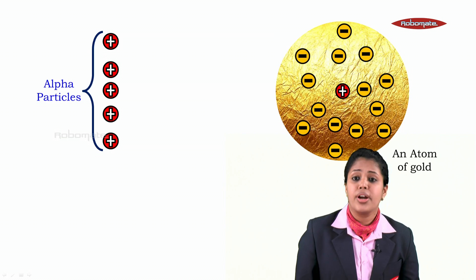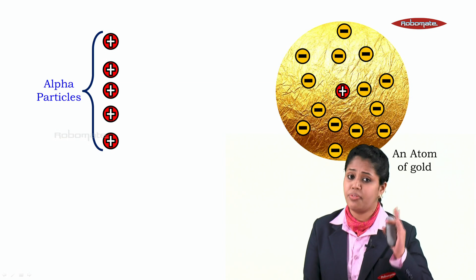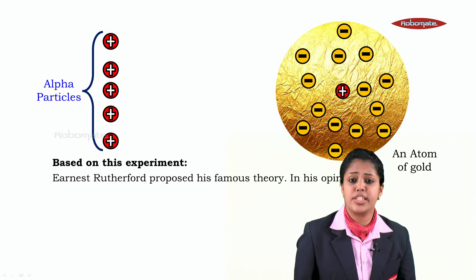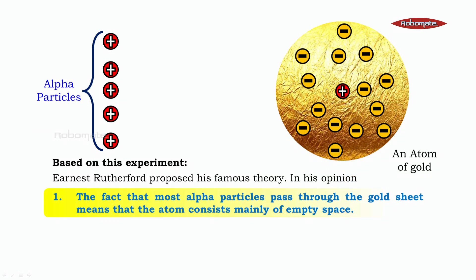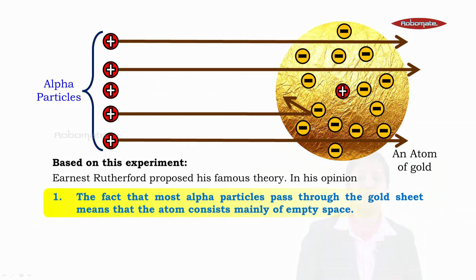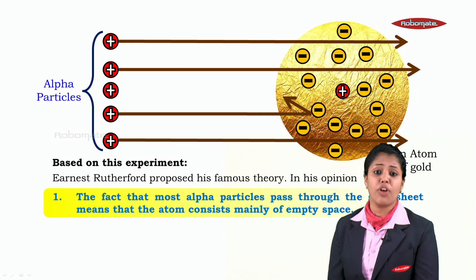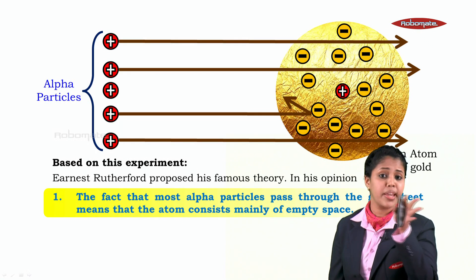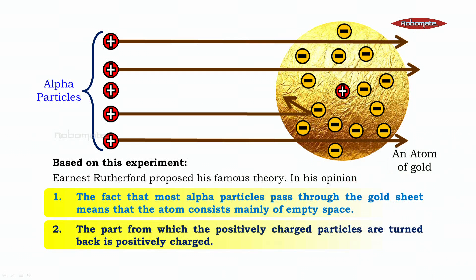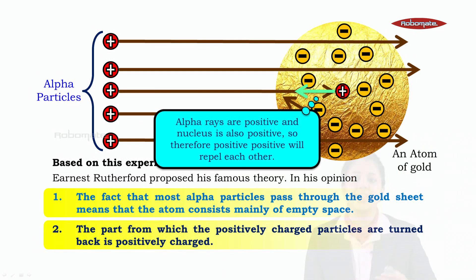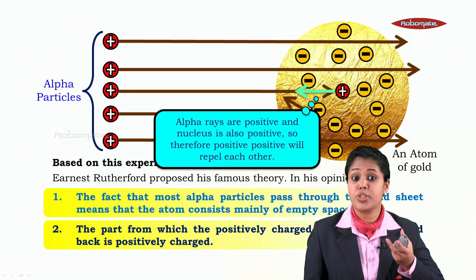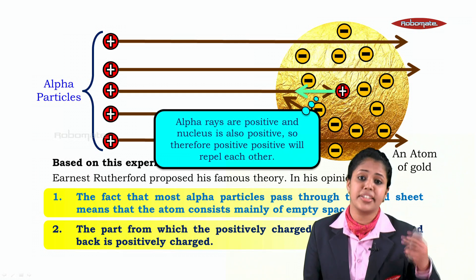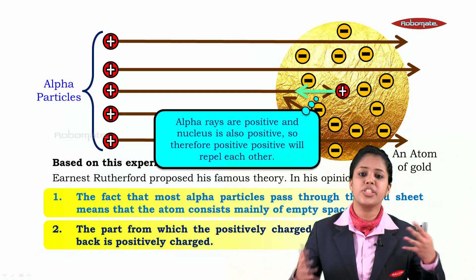Based on this experiment, Ernest Rutherford proposed his famous theory. In his opinion, the fact that most alpha particles pass through the gold sheet means the atom consists mainly of empty space. The part from which the positively charged particle turns back is very small in size but is a positively charged particle. Alpha rays are positively charged and the nucleus at the center is also positively charged — therefore positive-positive repulsion.